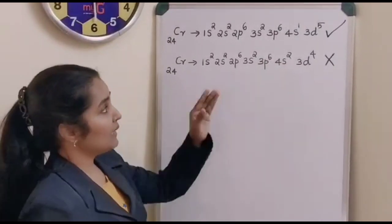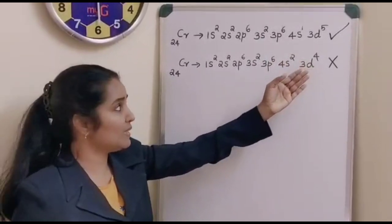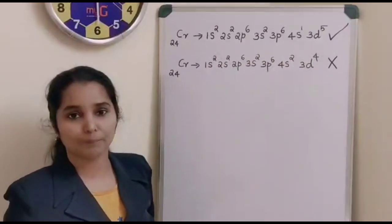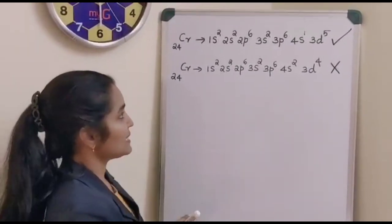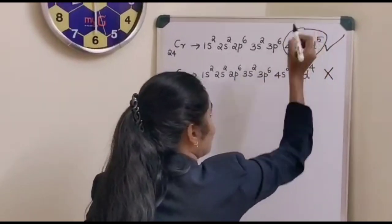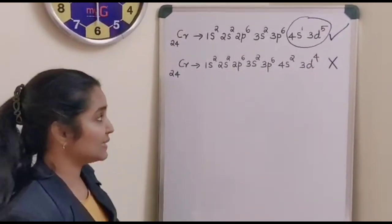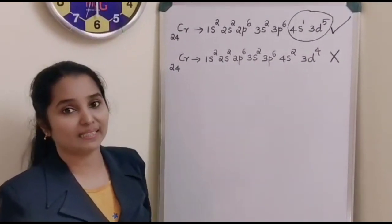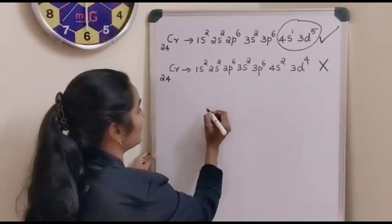That means an electron has gone to the higher energy orbital before filling the lower energy orbital. What may be the reason for that? This explains the exceptional behavior of chromium.